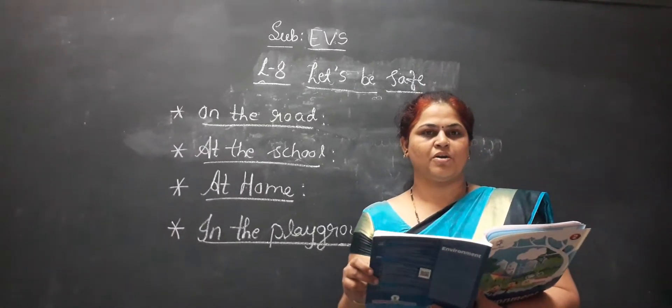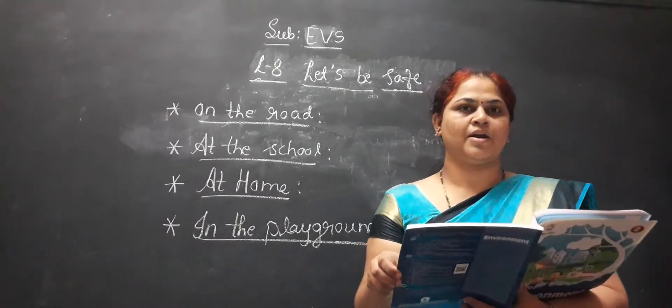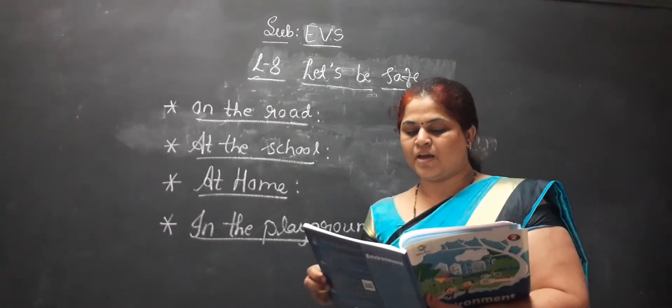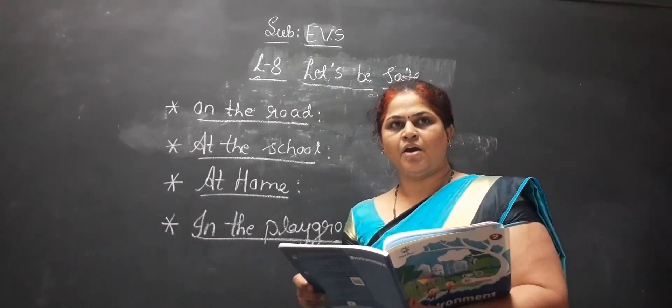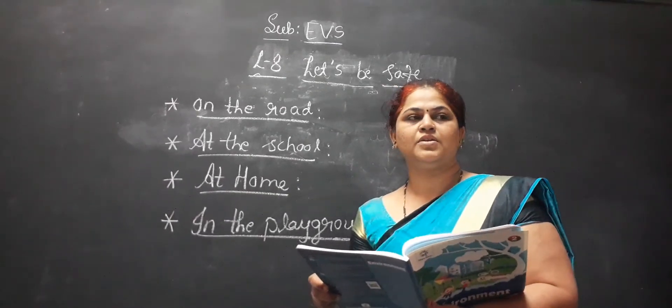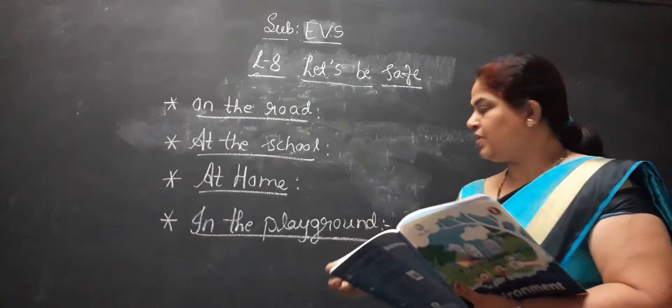If there is no zebra crossing, then before crossing the road, you have to look first right and then left and again. You have to follow traffic lights also. Do not tease the animals, if you tease, they may bite you.